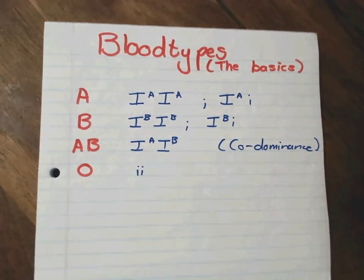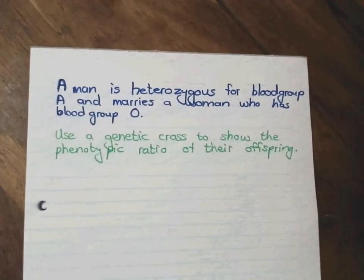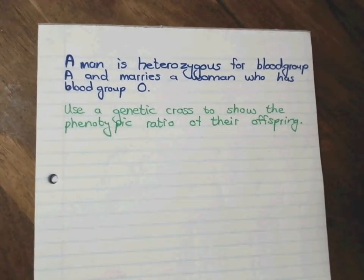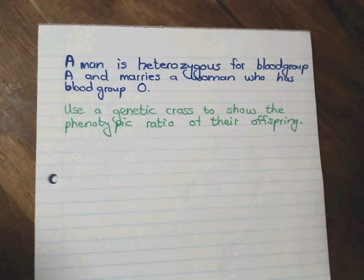So now that we've got that, we can have a look at a genetic cross. So in this genetic cross, we have a man that is heterozygous for blood type A and he marries a woman who has blood type O. And they say use a genetic cross to show the phenotypic ratio of the offspring.